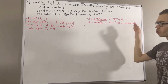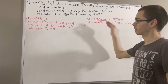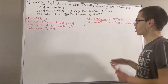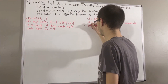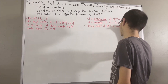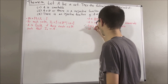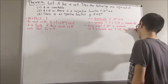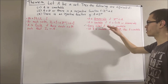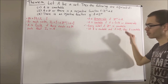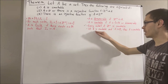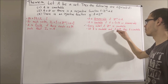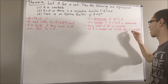We're going to be using two properties of countable sets in proving this theorem. First, every subset of the positive integers is countable. Second, if B is a countable set and there is a bijection between A and B, then A is countable.